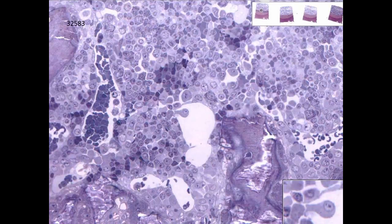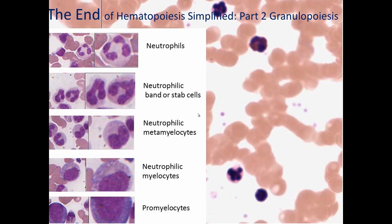Here's a neutrophil and a couple of lymphocytes visible, with one cell squeezing out of the extravascular space into the vascular space. That's the end of Hematopoiesis Simplified Part 2. Thank you.